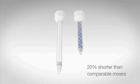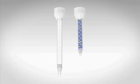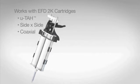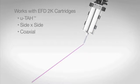OptiMixer's proprietary design allows it to deliver optimal mixing results in a 20% shorter length without impacting flow rate or back pressure, allowing you to operate closer to the dispensing surface for increased accuracy, control, and quality.